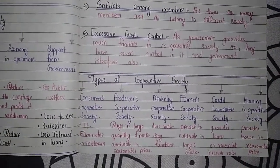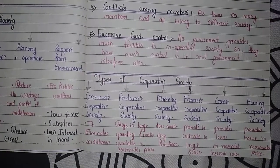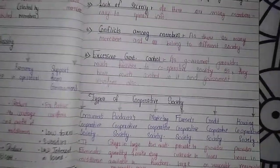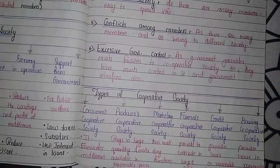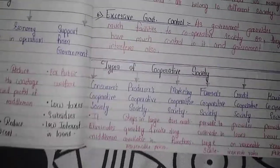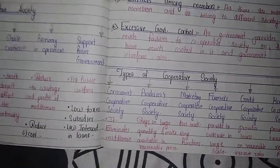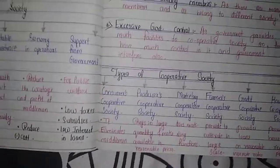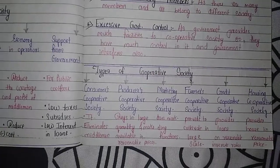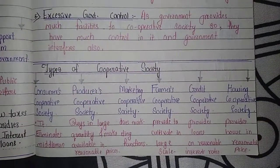For example, if 10 people have formed a credit cooperative society and one member needs money, the society lends money from its pool. When new members join, more funds become available, and the society earns a profit on the interest charged.